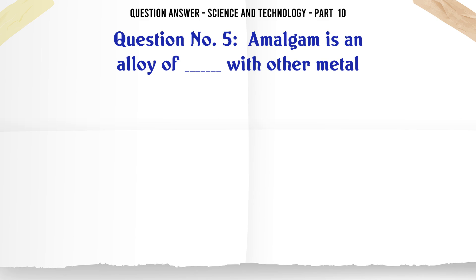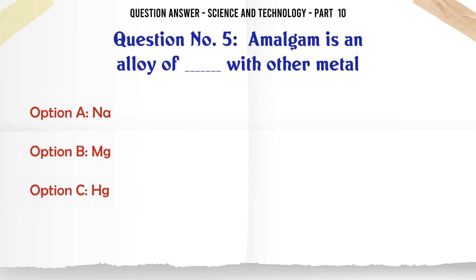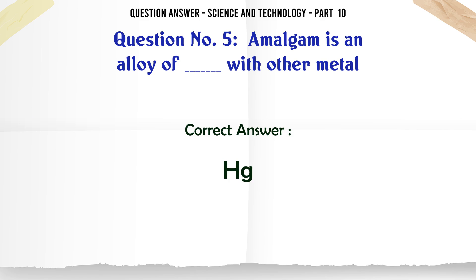Amalgam is an alloy of dash with other metal. A. Na. B. Mg. C. Hg. D. Ca. The correct answer is Hg.